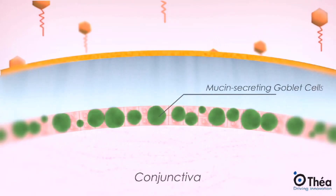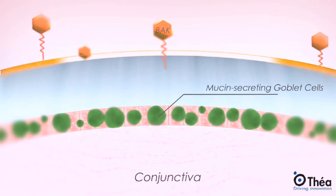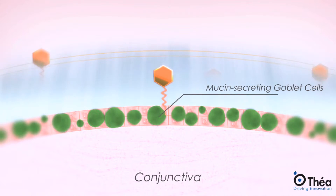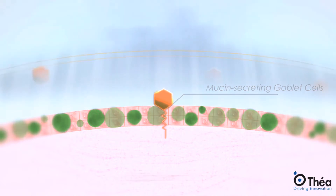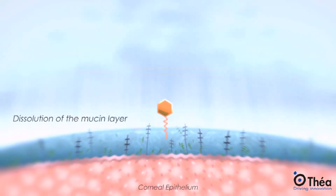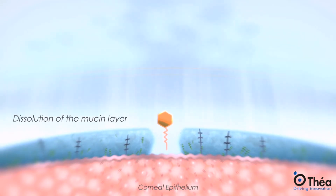In addition, BAC encourages partial destruction of the mucin-secreting goblet cells in the conjunctiva, which leads to dissolution of the mucin layer on the surface of the corneal epithelium and so a destabilization of the tear film.